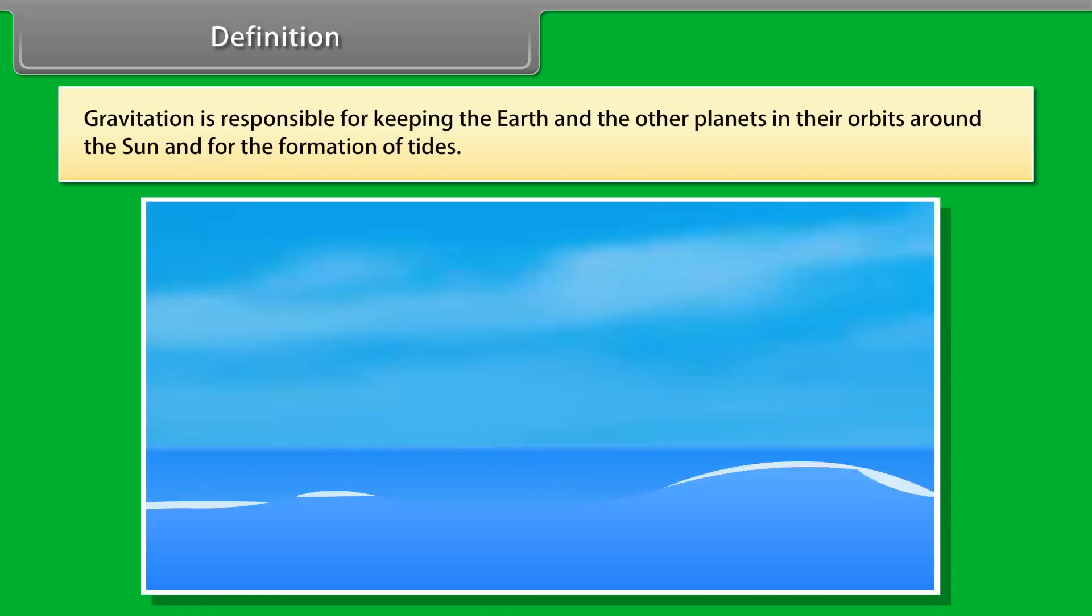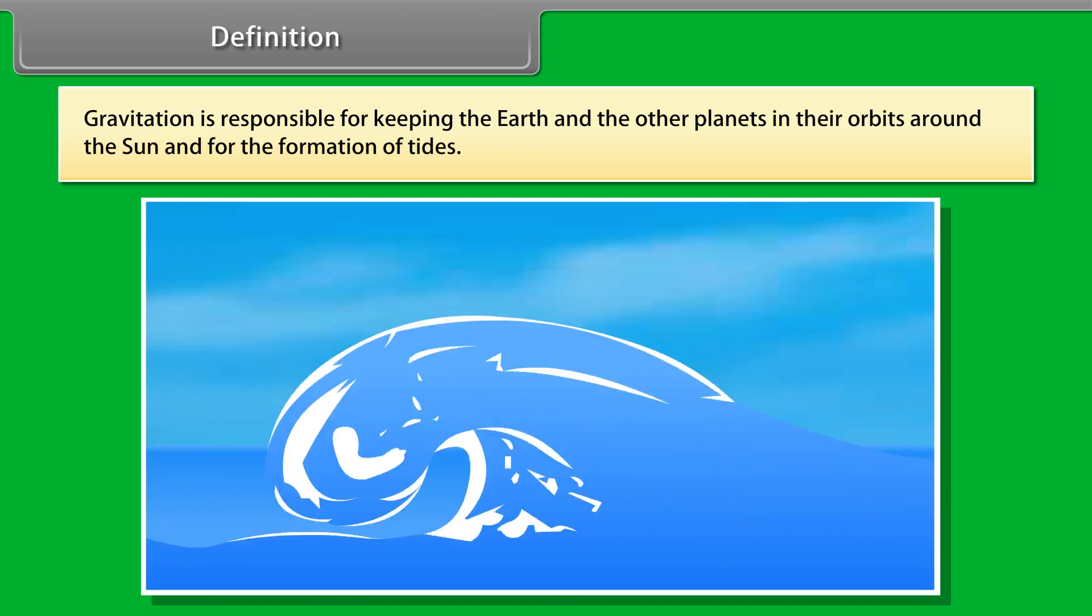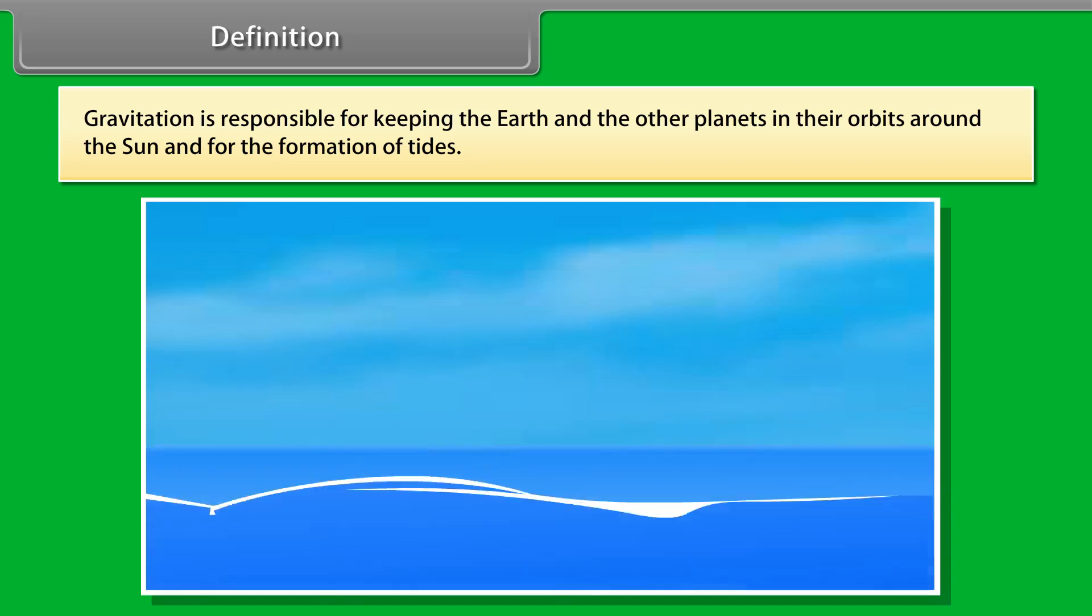Gravitation is responsible for keeping the Earth and the other planets in their orbits around the Sun and for the formation of tides.